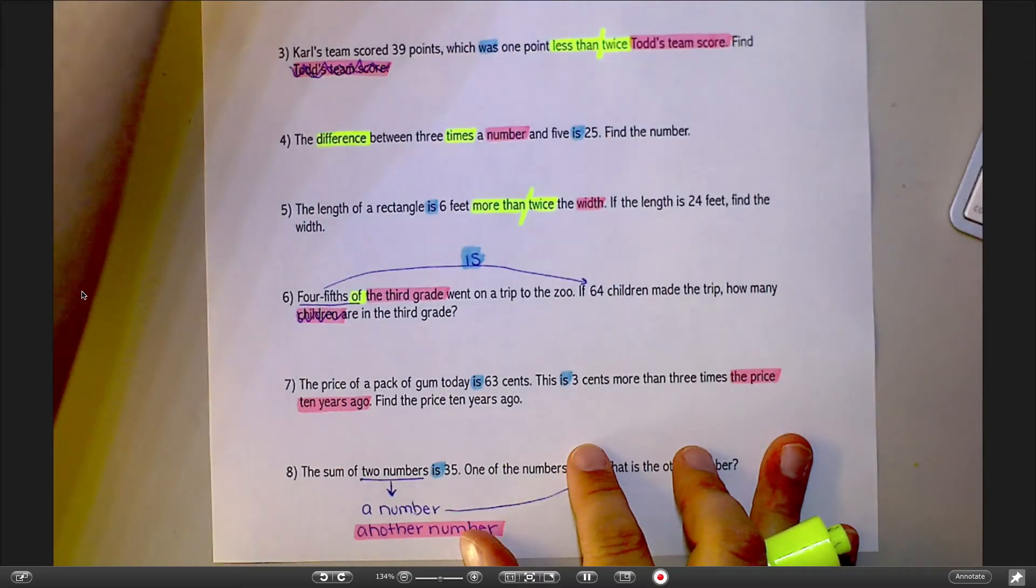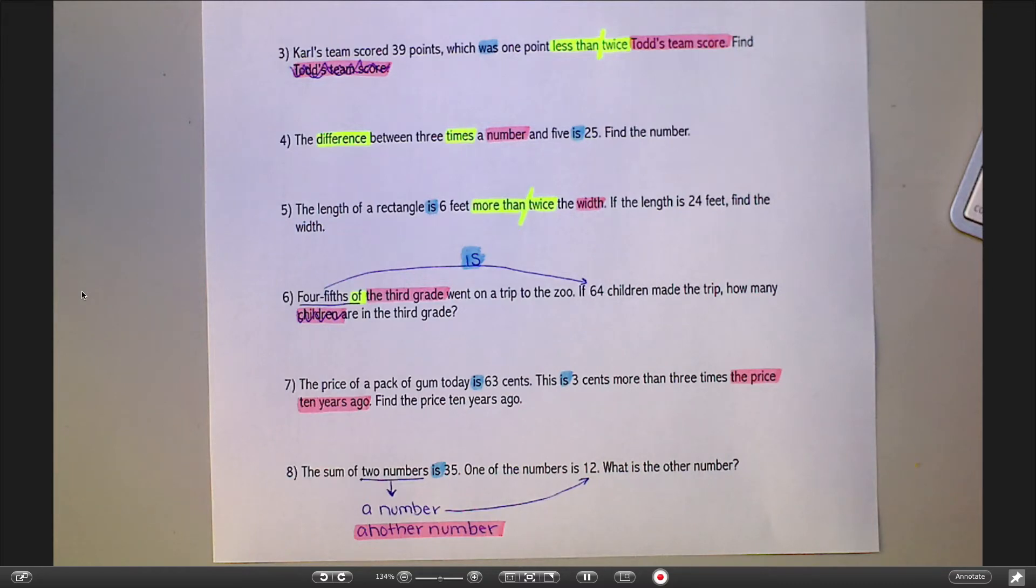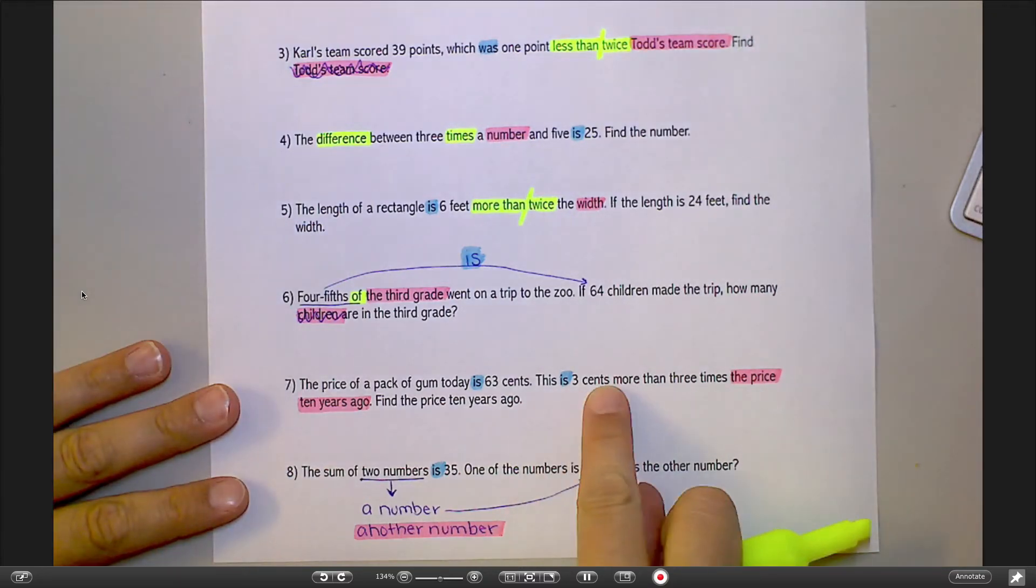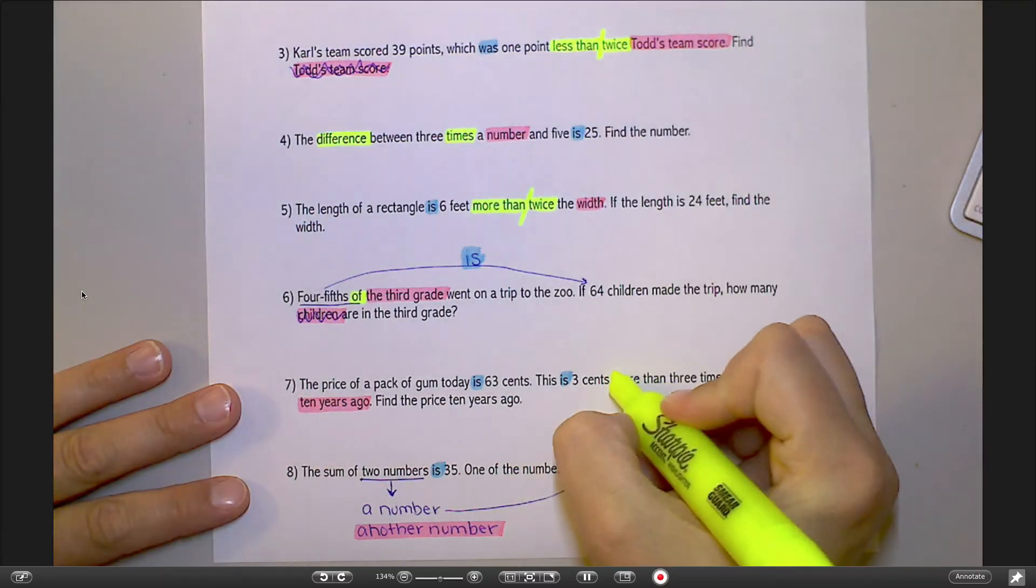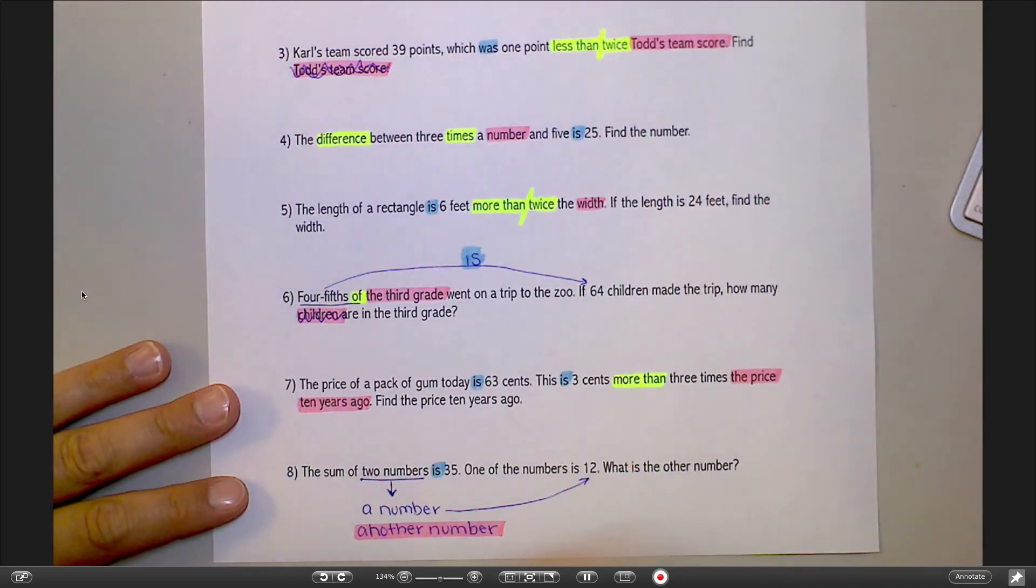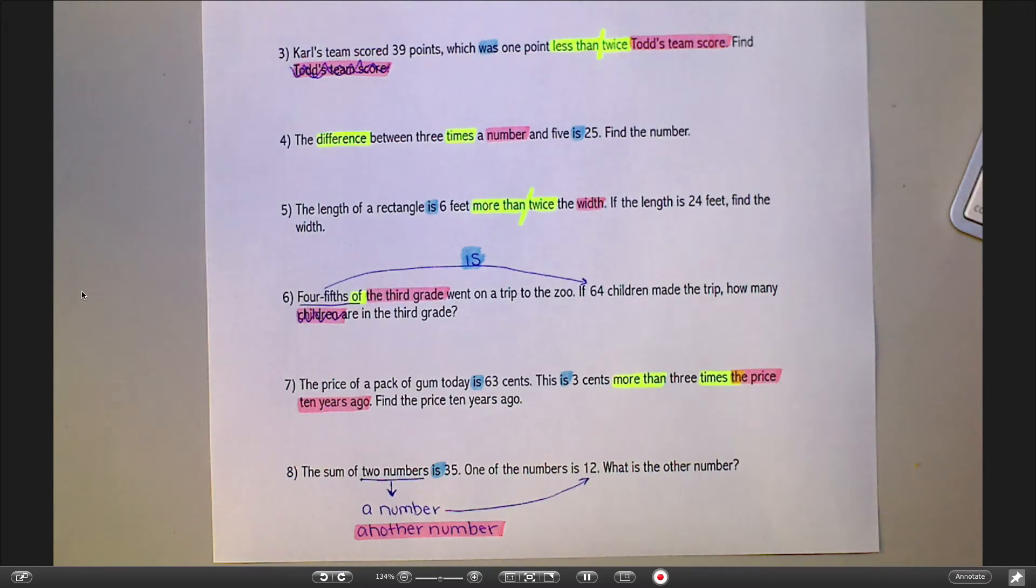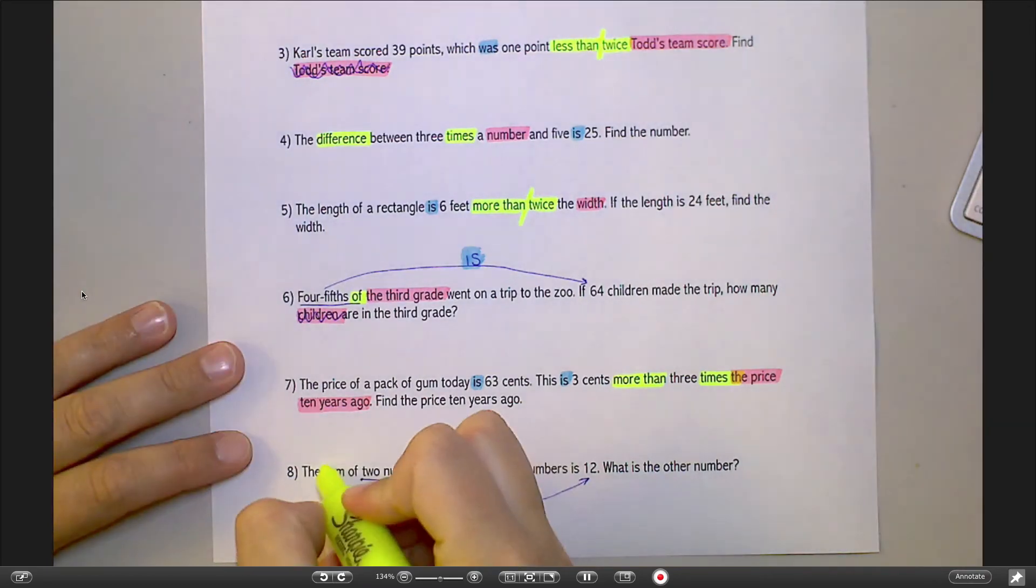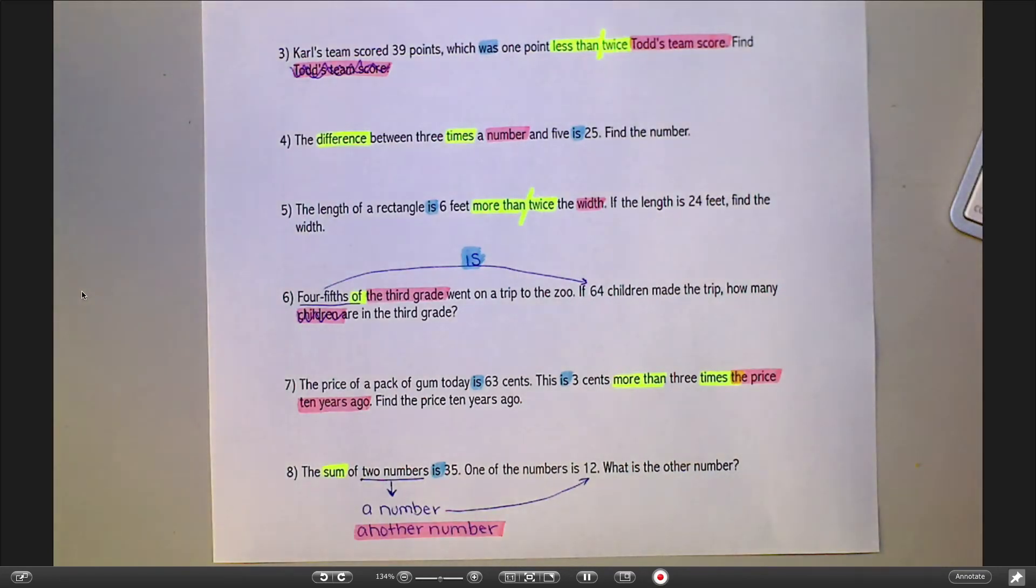Number seven, the price of a packet coming today. Three cents more than. So more than is an operation word. Three times the price ten years ago. There's some operation words there. And then number eight, we have the sum, which means addition. It says one of the numbers is twelve. What is the other?